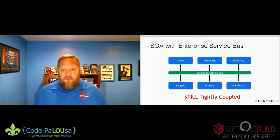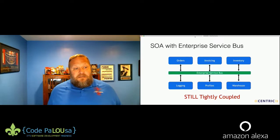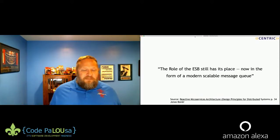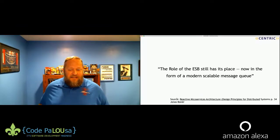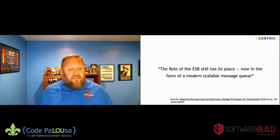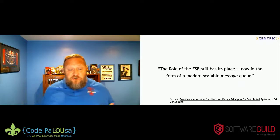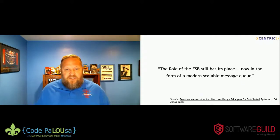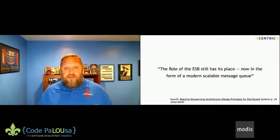We have a more expensive tightly coupled system, but it's kind of better — we've solved the discovery problem and have a consistent experience. There's a quote from the book 'Reactive Microservices Architecture,' page 34, which says the role of the ESB still has a place, but now in the form of a modern scalable message queue. Let's use it for what we need — not data transformation, not customizable process orchestration — just as a modern scalable message queue. But used that way, it becomes a very expensive message queue requiring lots of servers.